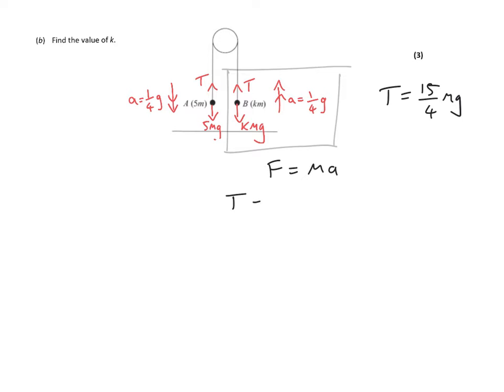This time, the force is pointing up because that's the way the acceleration is going. And so T minus KMG equals the mass, which is KM, times the acceleration, which, as was before, a quarter G.